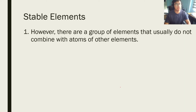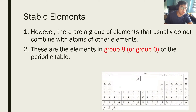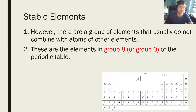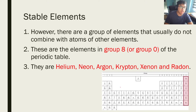However, there is a group of elements that usually do not combine with atoms of other elements, and these are the elements in group 8, or sometimes known as group 0, of the periodic table. You can see from the periodic table these are the members, or the elements, in group 8.